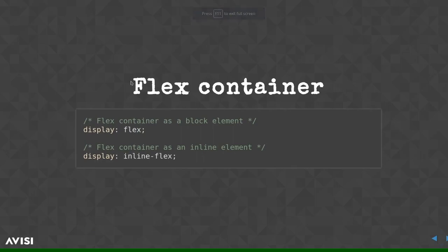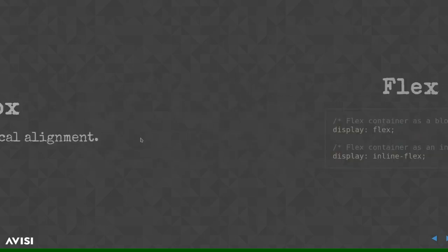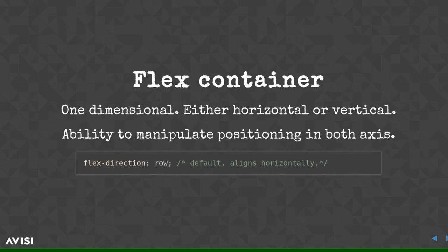Let's go into more of the Flexbox specification. We create a flex container with 'display: flex', which creates a block-level flex container, or 'display: inline-flex' for an inline version. We can also set the direction of items inside the container using 'flex-direction'. The default is row, which goes left to right. You can also set it to column, which goes top to bottom. Crazy thing: you can also reverse the order with row-reverse or column-reverse.